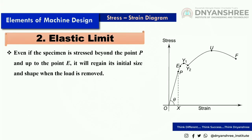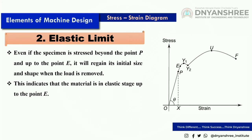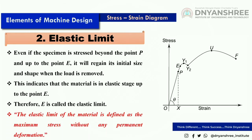Even if the specimen is stressed beyond point P and up to point E, it will regain its initial size and shape when the load is removed. This indicates that the material is in the elastic stage up to point E. The elastic limit is defined as the maximum stress without any permanent deformation — up to point E, there is no permanent deformation.